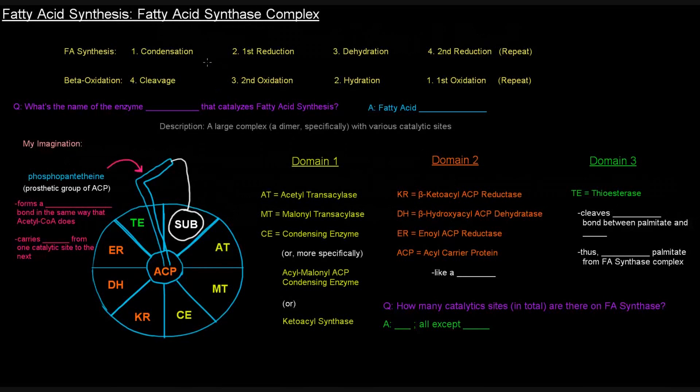So in this video, I want to talk a little bit about the fatty acid synthase complex, the actual enzyme itself. We mentioned before that fatty acid synthesis has a condensation reaction, the first reduction, dehydration, second reduction, and this process repeats every time that we add a 2-carbon unit. And beta-oxidation is essentially the opposite, we've mentioned that before.